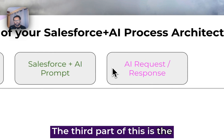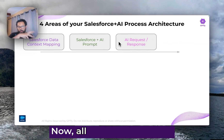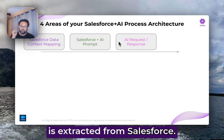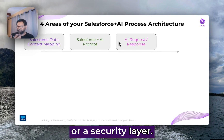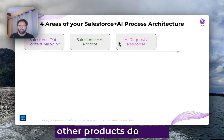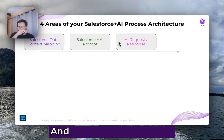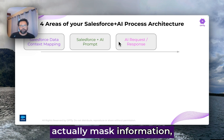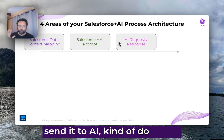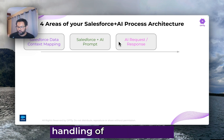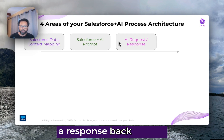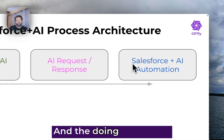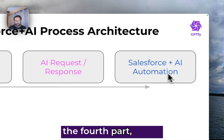The third part is the actual request/response. All of this information is extracted from Salesforce. Maybe there is a trust or security layer — we do that in GPT-5, and other products do it too. The idea is how do you actually mask information, send it to AI, handle requests, error handling, models, temperature — all of that — get a response back and do something with that response.